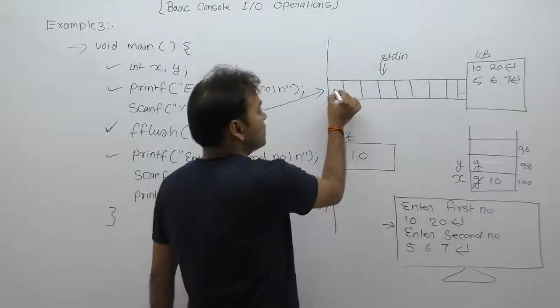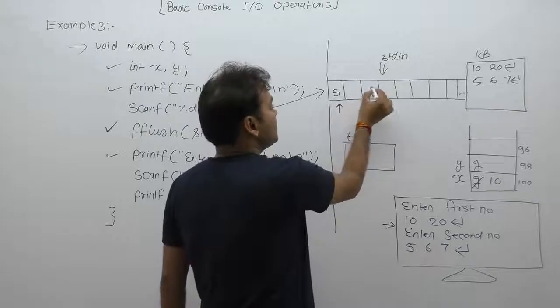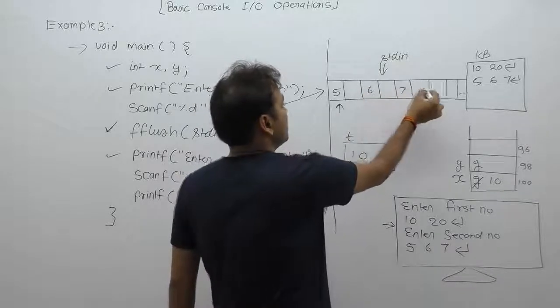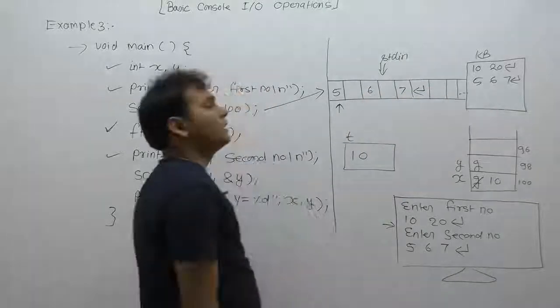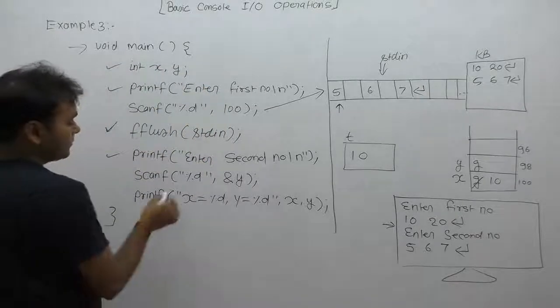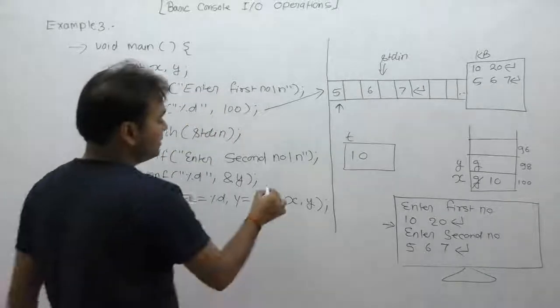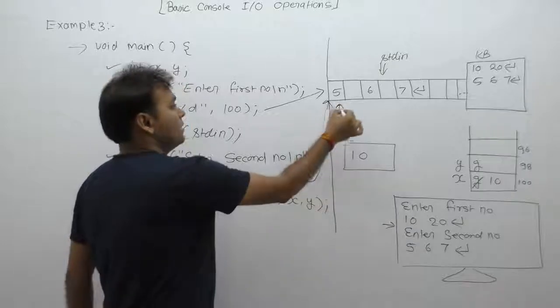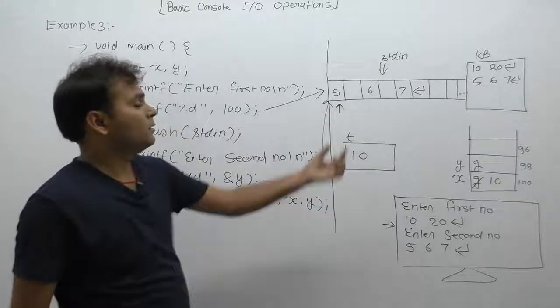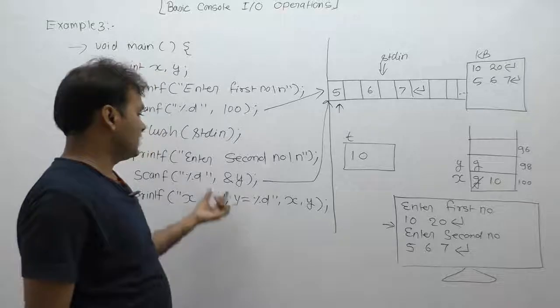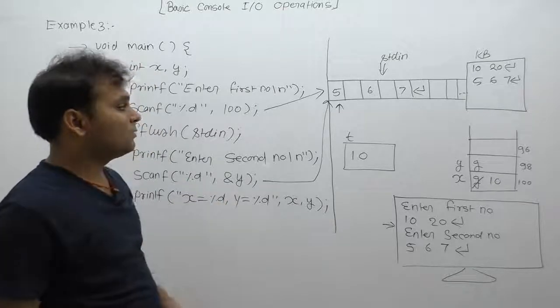Again, new line character slash n. Next time, data found immediately. Buffer current position, read integer numbers according to percent d, then read. OK, now 5.